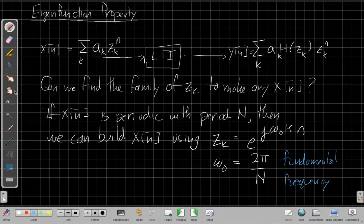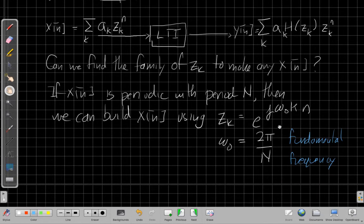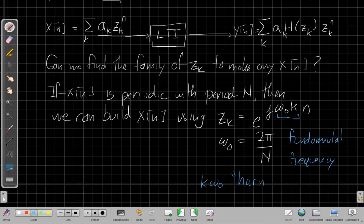And then, so all these z sub k's are just scaling the frequency up, right? So I have different values of this, and so we say these different values, k omega naught, are called the harmonics of the fundamental frequency. And so we have the first, the kth harmonic. When k equals 2, I have the second harmonic. When k equals 3, I have the third harmonic, and so on.